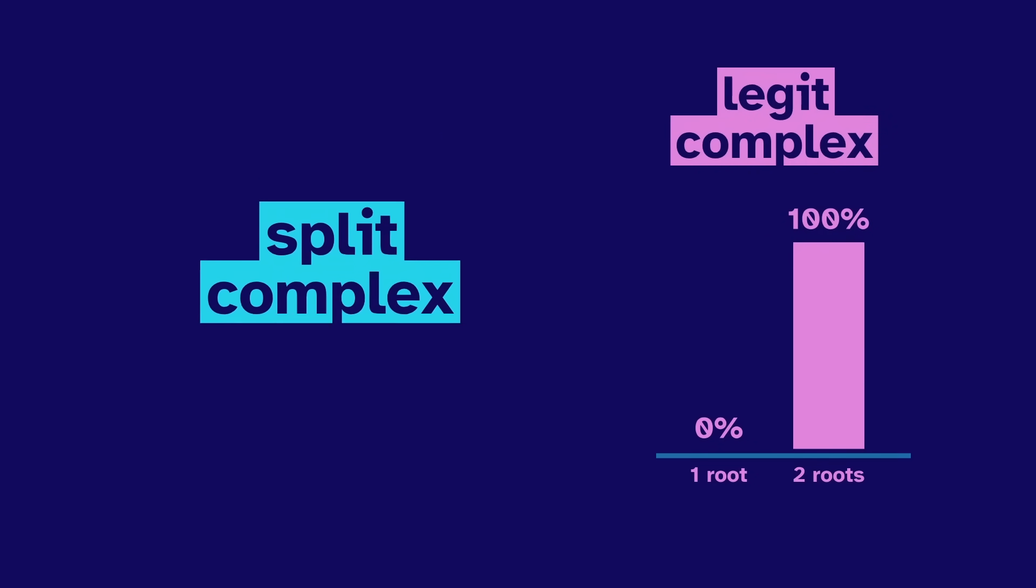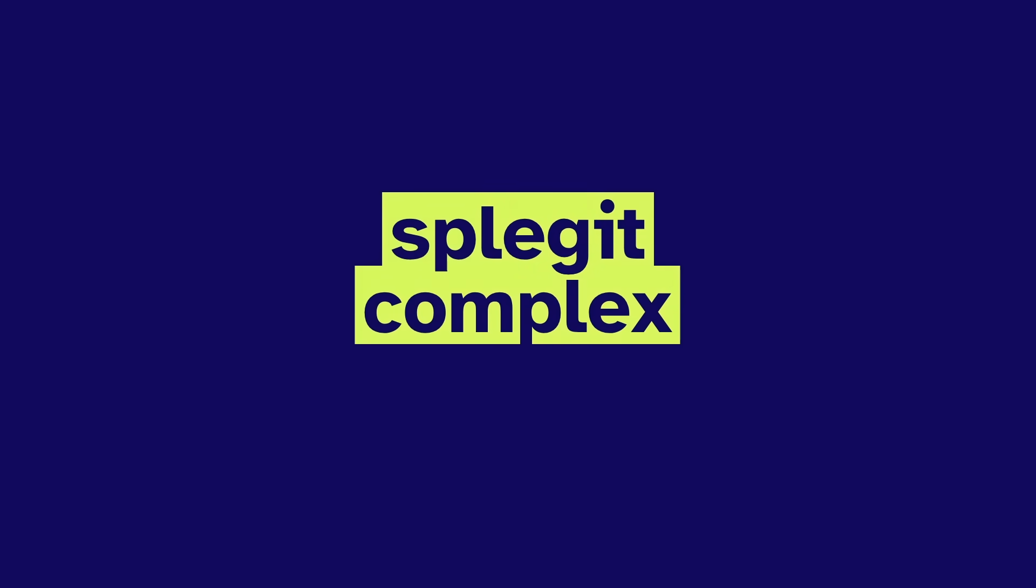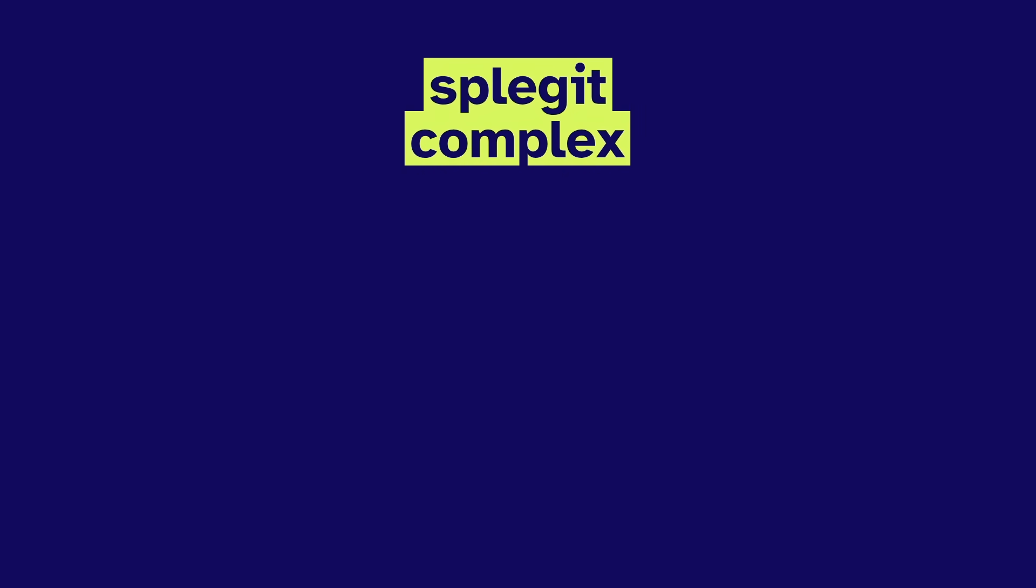Let's mix the splits with legits to get the spligit complex numbers. We'll have i squared to negative one, and j squared to positive one, then ij squared to… Huh. Should it be negative one or positive one?